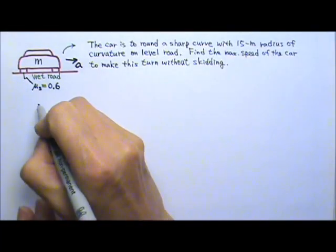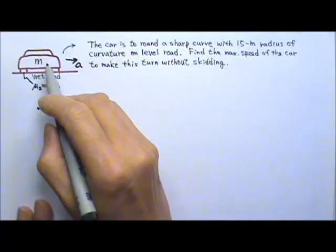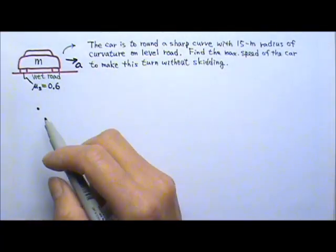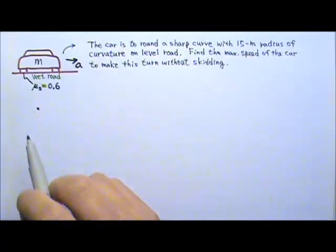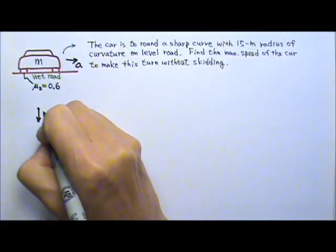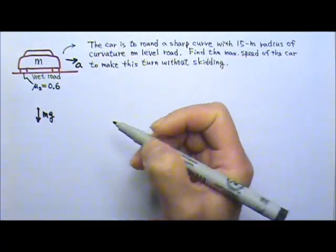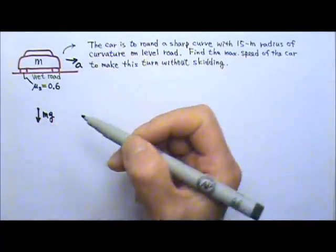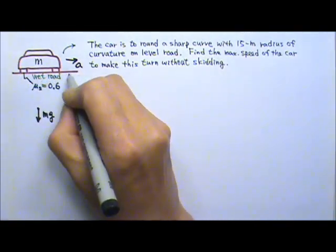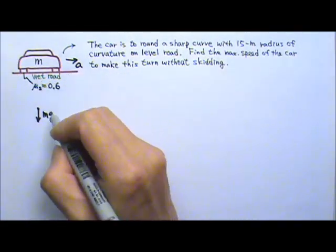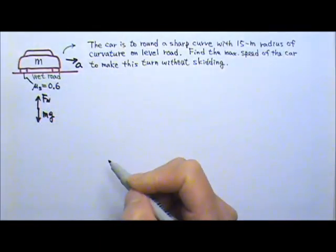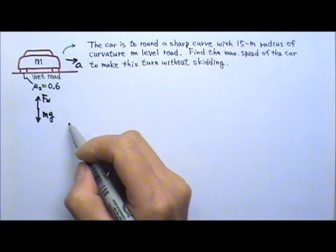Let's draw the force diagram. For the car with a horizontal acceleration, we'll draw all the forces. You have the non-contact force, Mg — we don't know M, so we just leave it as M. And it's contacting the road, so we have the normal force going upward, and we have a friction.